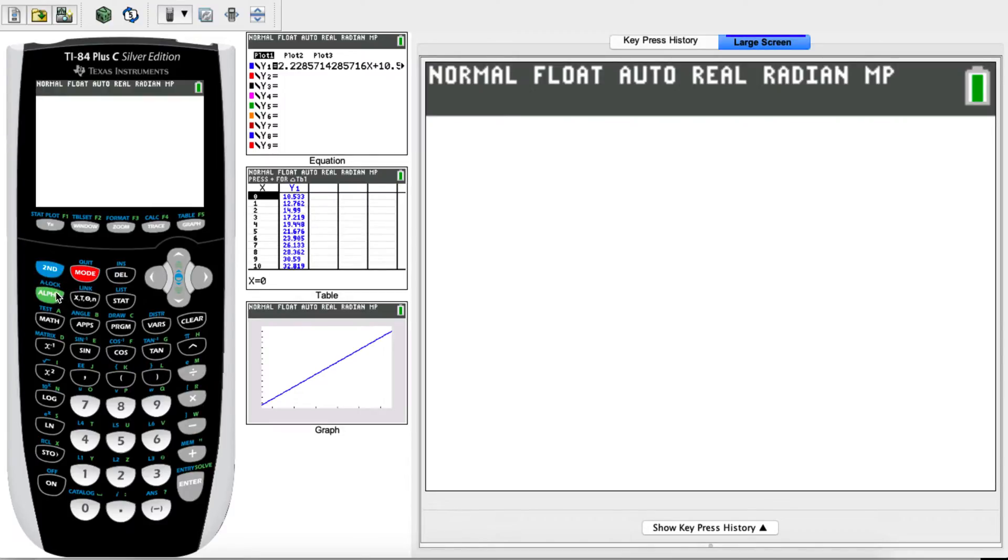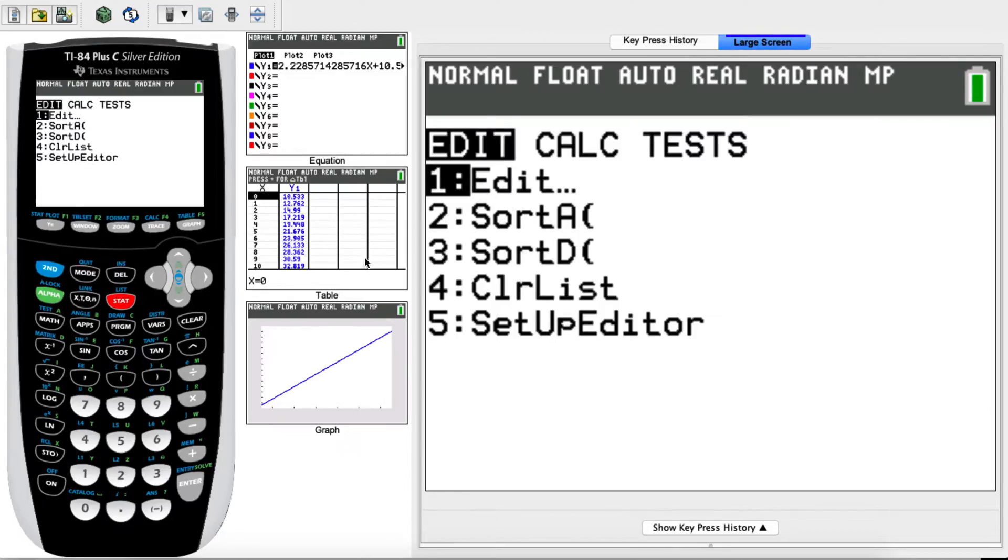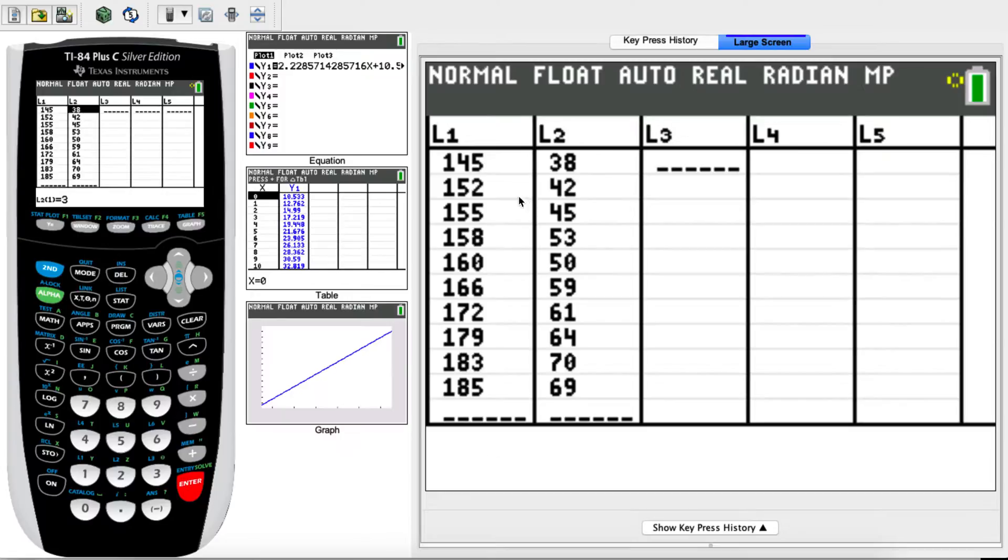So in order to find the R value, you need to go to stats and then you need to edit your list. So I'm going to put my X in L1 and then my Y in L2. So I've put these values in. Make sure that you've written the correct values. Even if you write a single digit incorrectly, you will get the wrong R value. So make sure everything's accurate. Then once that's in, keep it consistent with X in L1, Y in L2.